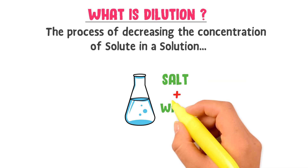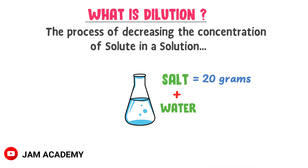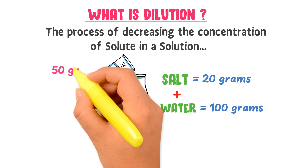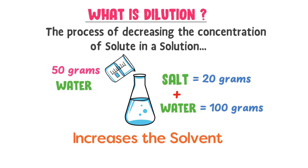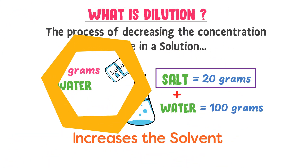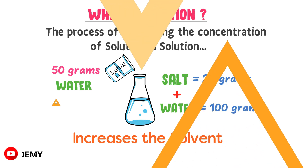For example, consider a salt and water solution where the amount of solute is 20 grams and the amount of solvent is 100 ml. If you add 50 ml more water, you increase the amount of solvent while the amount of solute remains the same, thus decreasing the concentration of solute. This process of decreasing the concentration of solute by adding more solvent is known as dilution. This was all about Dilute Solution and its examples.